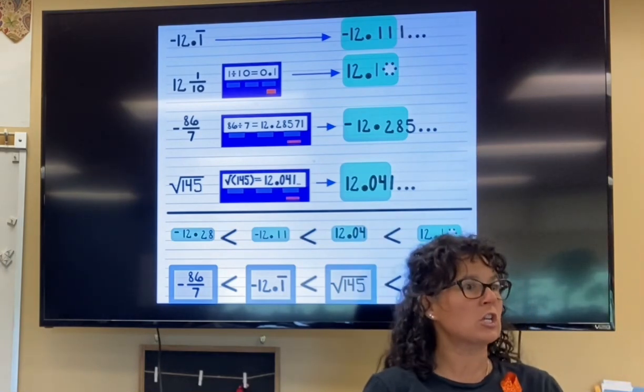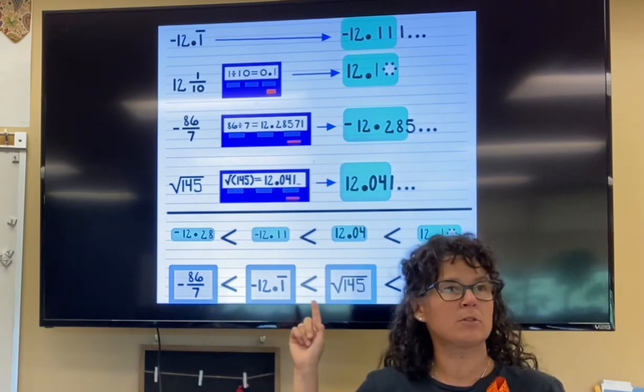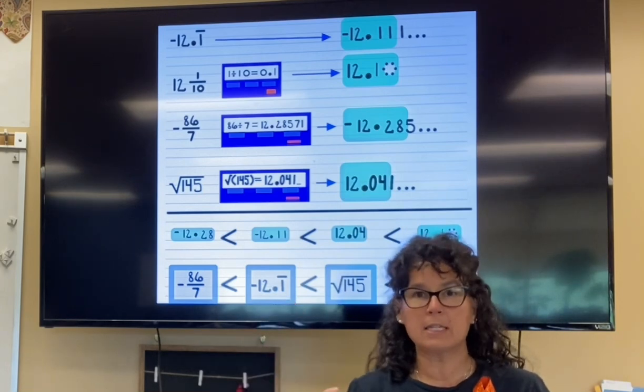So you're just arranging them from least to greatest, but turn them into decimals. Know that negative means you owe money, positive means you have money.